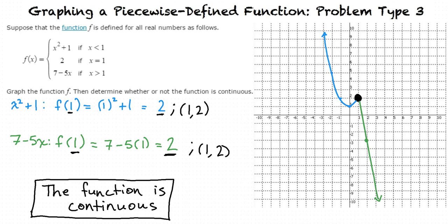In this function, if we only looked at the first piece, there would be a hole at 1 comma 2, making it not continuous, but the second piece filled in that hole. After that, the line continues on to infinity, so this graph is continuous.